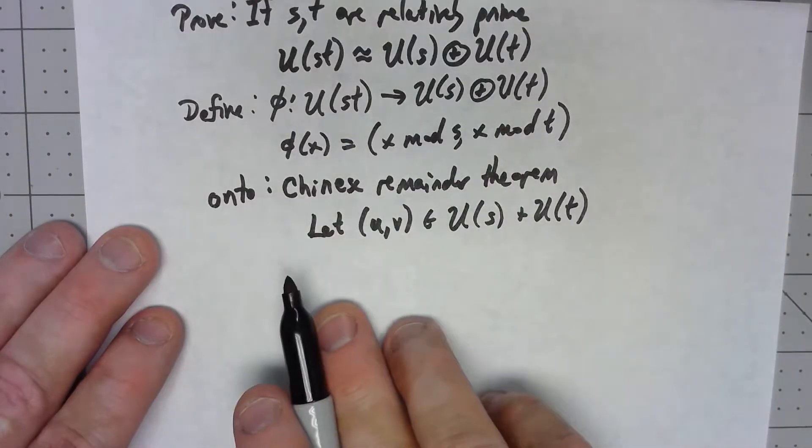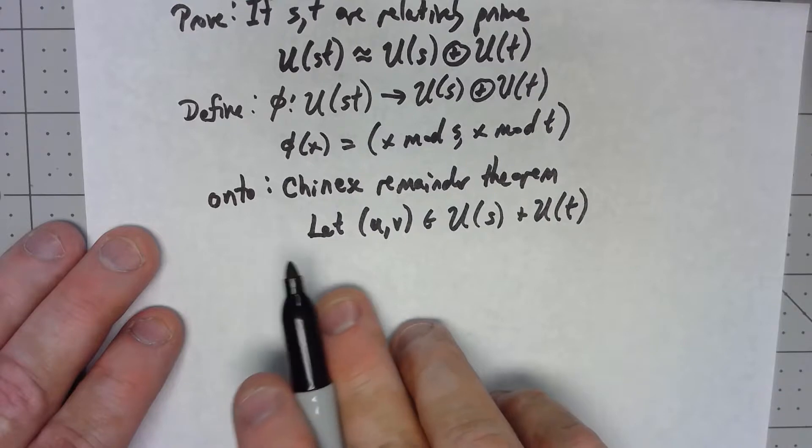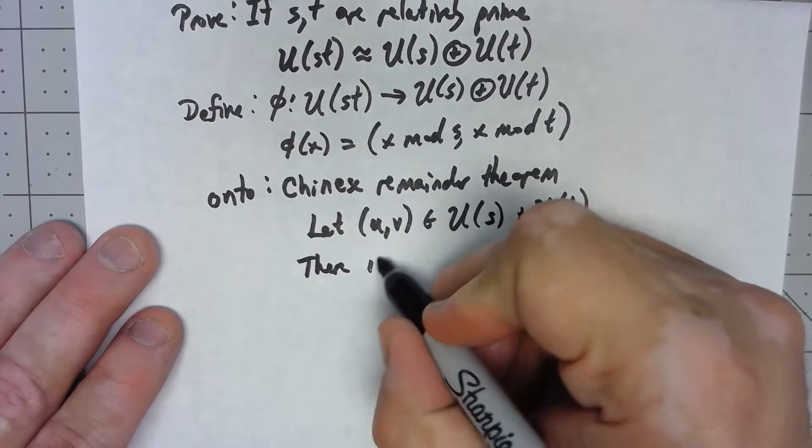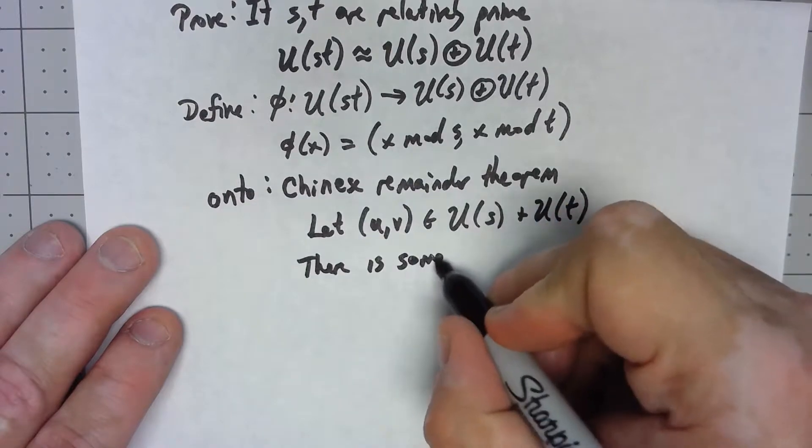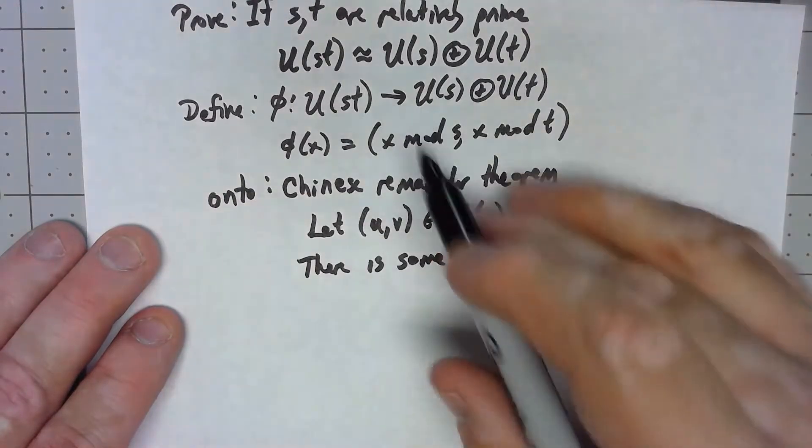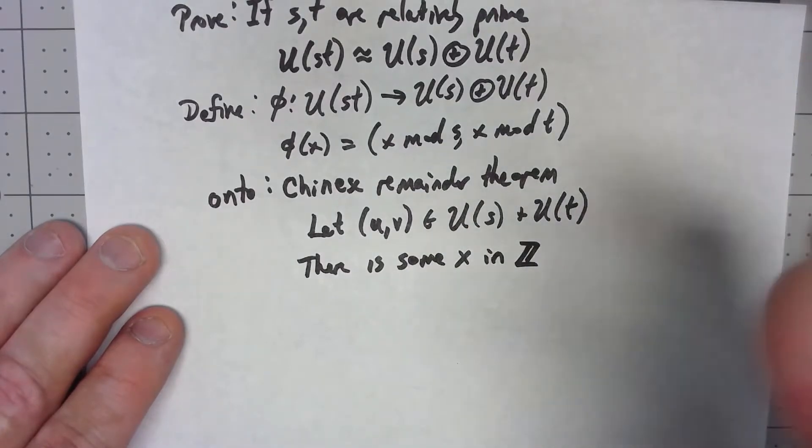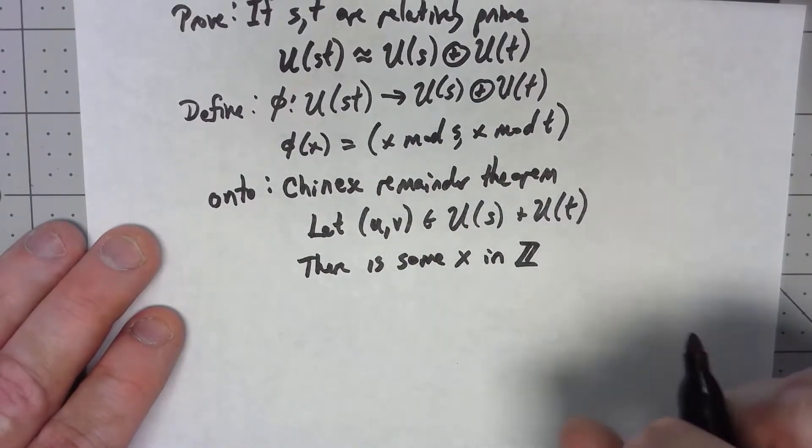We'll use that in a minute, but what the Chinese remainder theorem says is that there is some x in the, well really all of Z, and we'll get that down to our U(st) in a minute.